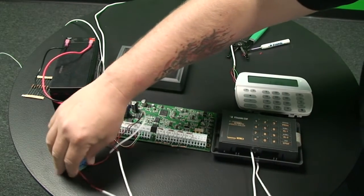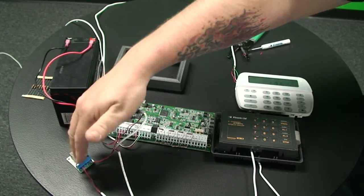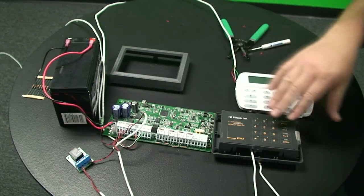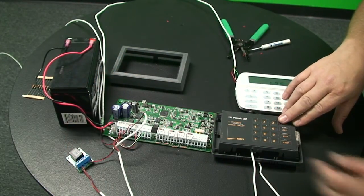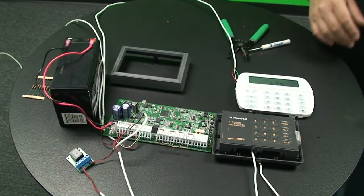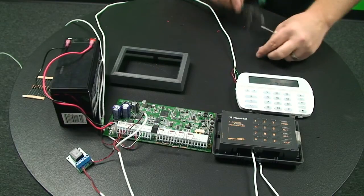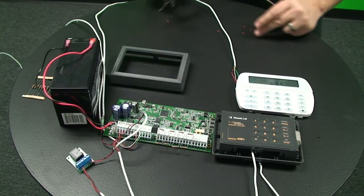And so what we have is we have our relay being fed from our control panel, and we have our normally open and common feeding our Z1 and negative on the dialer. And we've also supplied it power, and technically we've supplied it dial tone. So with that being said, that would be about it for the wiring on the dialer.